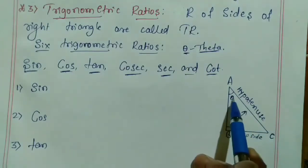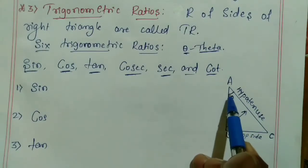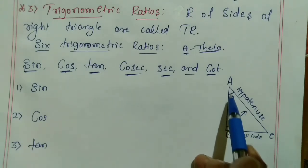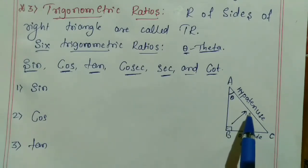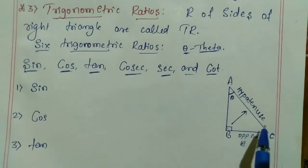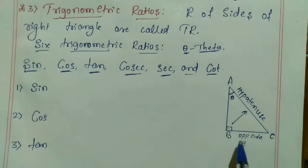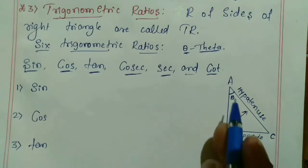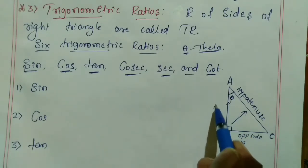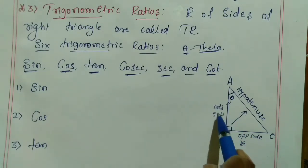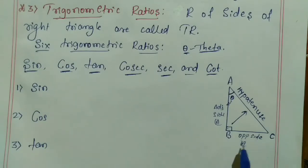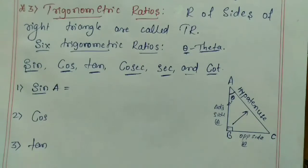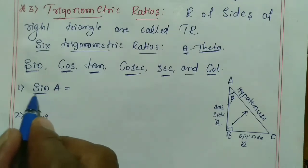Consider a right angle triangle where angle B is 90 degrees. The side opposite this right angle is called the hypotenuse. The side opposite angle A is called the opposite side of angle A, and the remaining side is called the adjacent side of angle A.